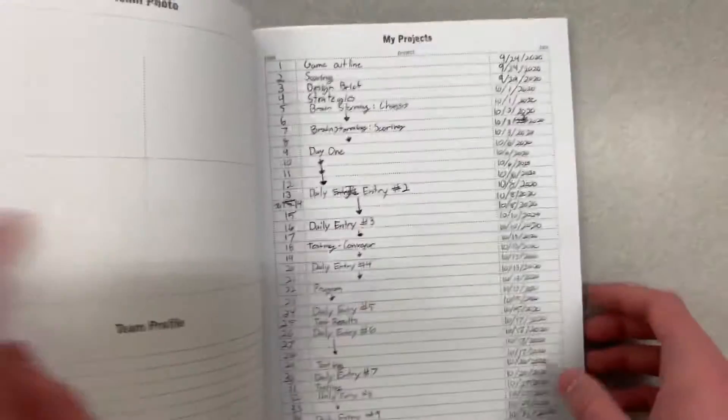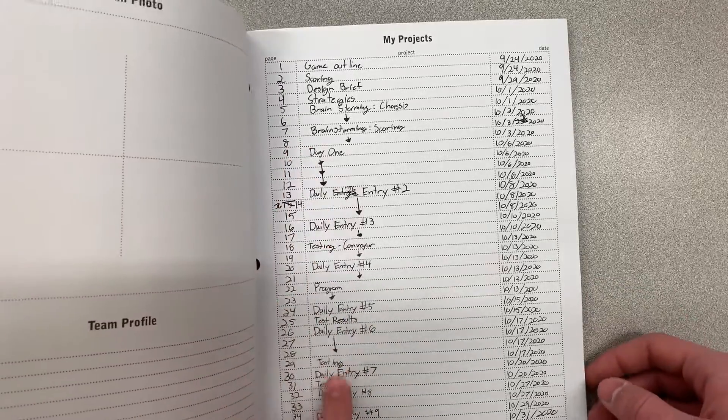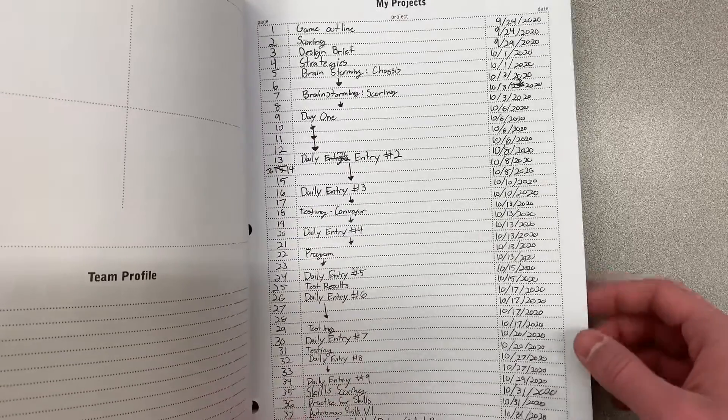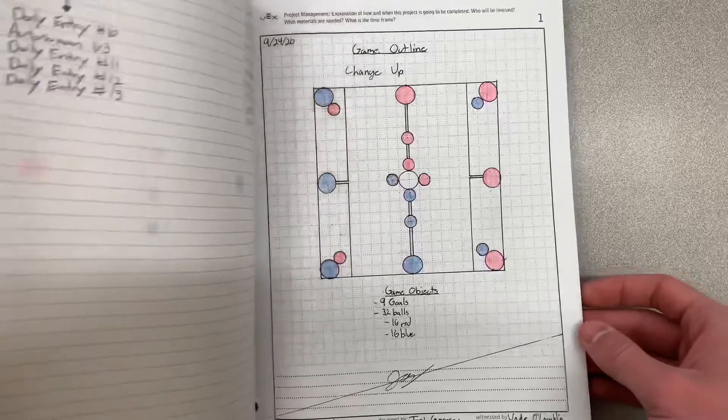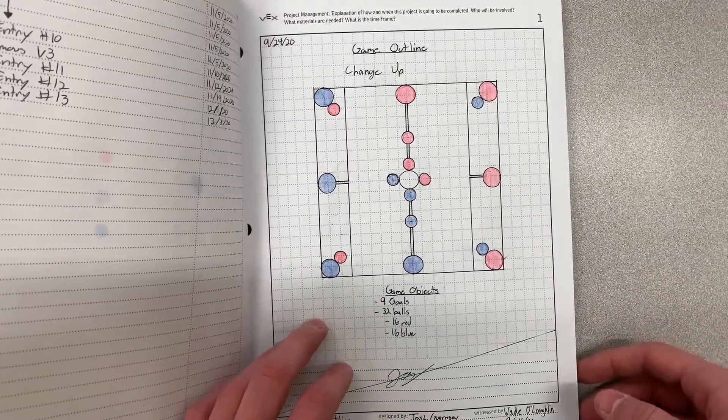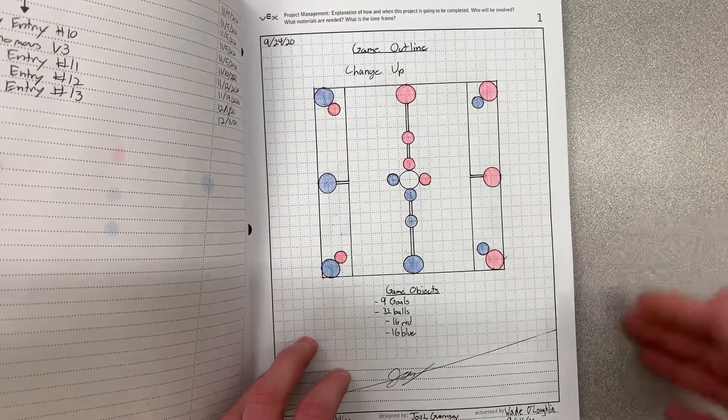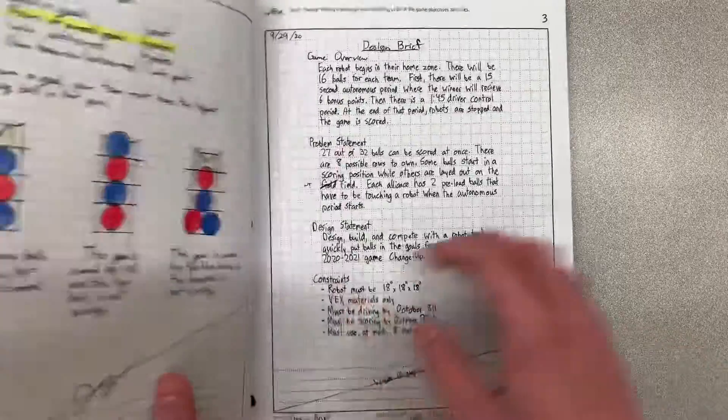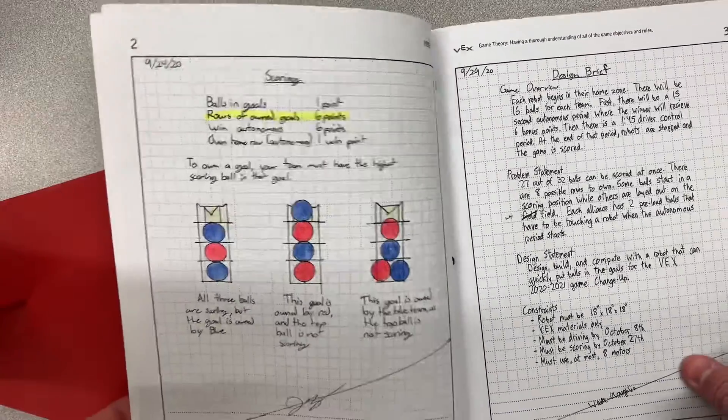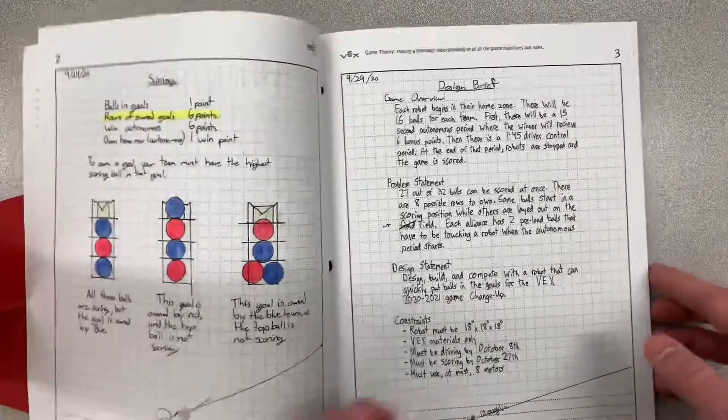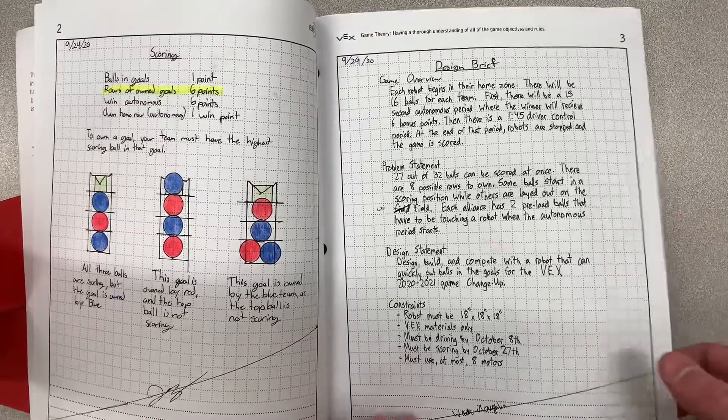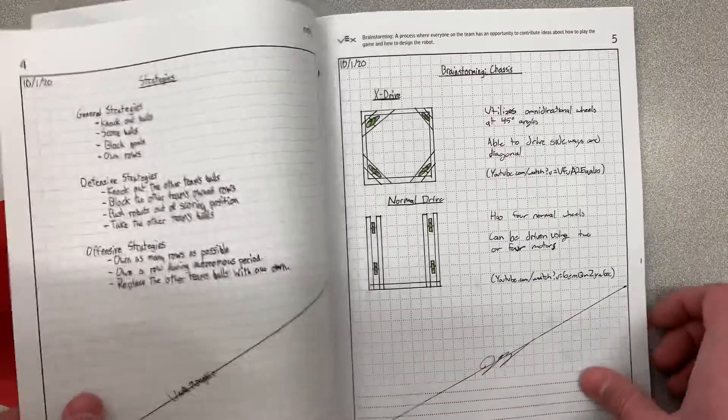So to start, you have to have a filled out table of contents with dates and page numbers. And then you start with the game outline for each year. And this just includes the rules and how you score. And also we have a short design brief and some strategies.